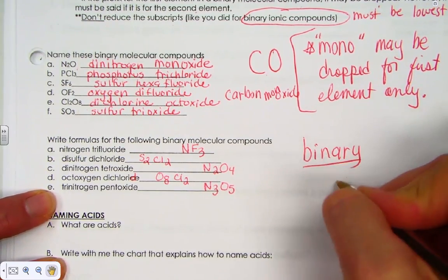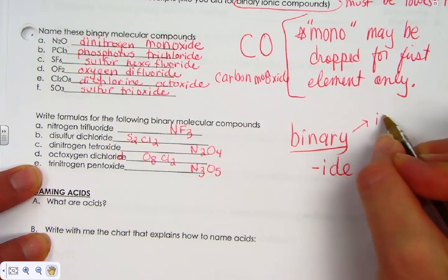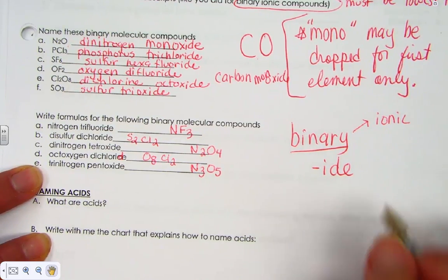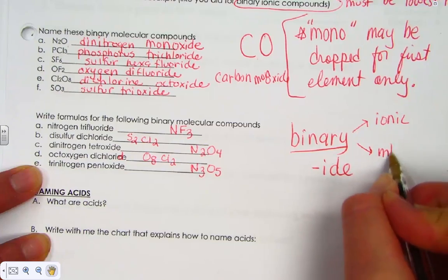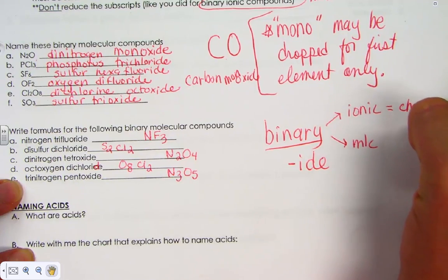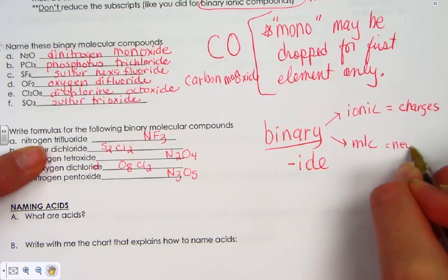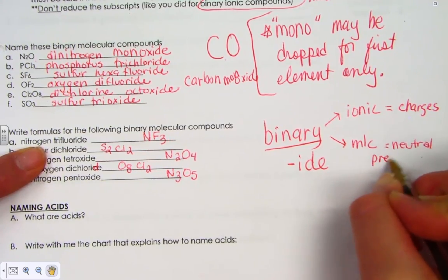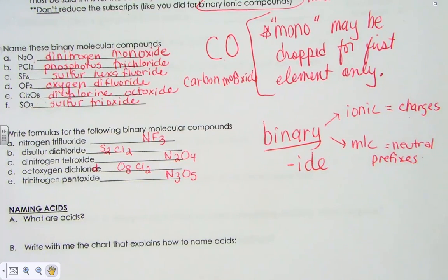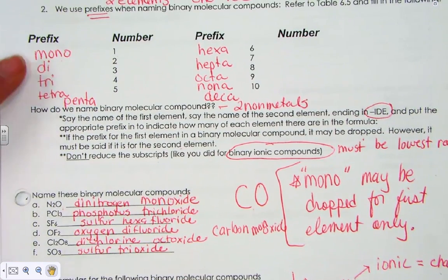Binary compounds end with I-D-E. Only the last name end with I-D-E. Remember binary compounds can be ionic. No prefixes. Or they can be molecular. Yes, prefixes. Ionic compounds are built of charges. Ionic compounds, we take a positive and negative and crisscross. Molecular compounds are neutral. There are no such thing as charges, so we must use prefixes in the name to tell the reader how many of each there are. Learning to count chemistry style.